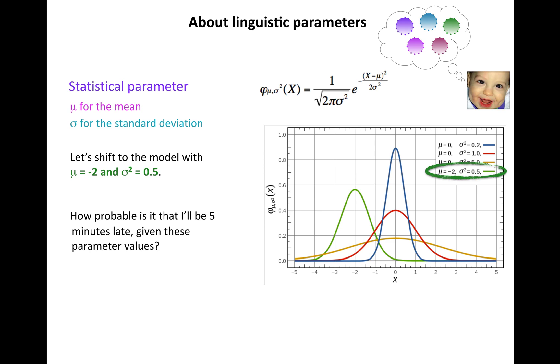How probable is it that I'll be five minutes late given these parameter values? Not very likely, not very probable. What about right on time? Also not that probable, pretty low probability here.